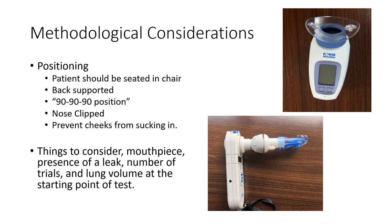There are some methodological considerations. Positioning: the patient should be seated in a chair with back supported in a 90-90-90 position — hips, ankles, and knees each at 90 degrees. Their nose should be clipped to create a hermetic seal so all pressure is captured through the mouthpiece. We also want to limit them from using their cheeks, as that can affect the pressure recording.